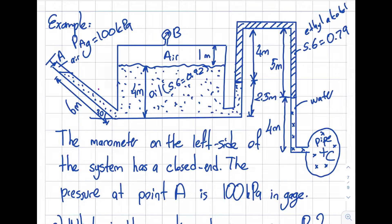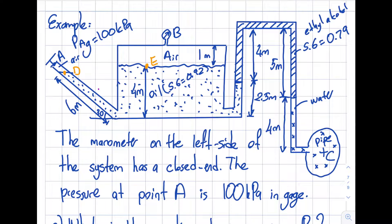For part A, my recommendation is to start with the column where you know the pressure — in this case, this column. Let's label points D and E. My first question: can I say that pA equals pD despite some height difference? In a system with both liquids and gases, I can neglect the effect of elevation change within the gas. So pA equals pD.